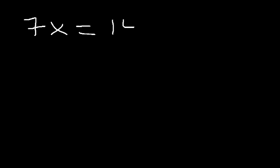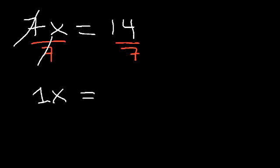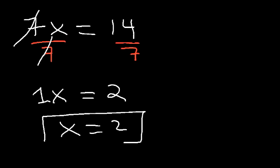Try this one: 7x equals 14. Just like the other problem, we need to divide both sides by 7. On the left side, 7 divided by 7 is 1, so we simply get x on the left side. 14 divided by 7 is 2. Therefore x is equal to 2. If you plug it back in, 7 times 2 is 14, so it works.